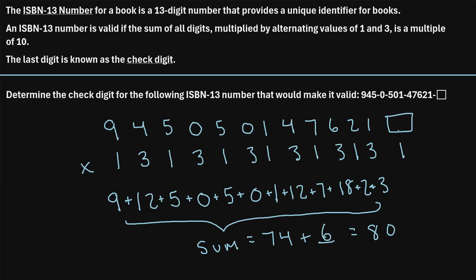So the check digit, this digit right here, this very last digit, must be a 6 in order for this UPC number to be valid. So that was just a quick example of how to find the check digit for an ISBN 13 number.